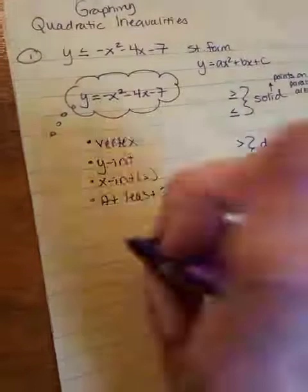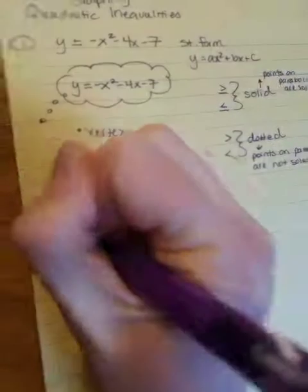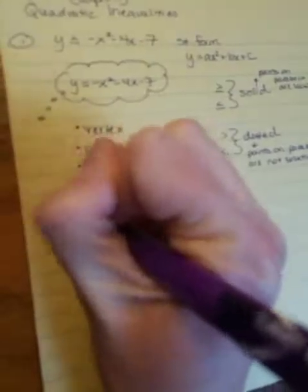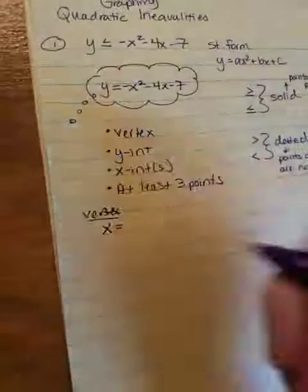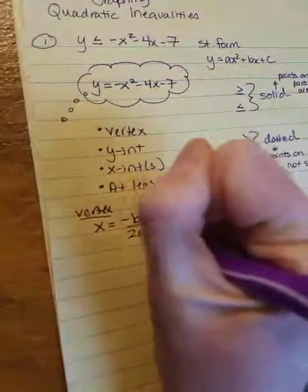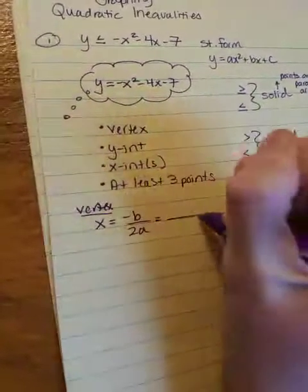Again, we're graphing this. We're going to find the vertex, so because it's in standard form, remember to find the vertex. x equals negative b over 2a. This is what we did at the beginning of last week.